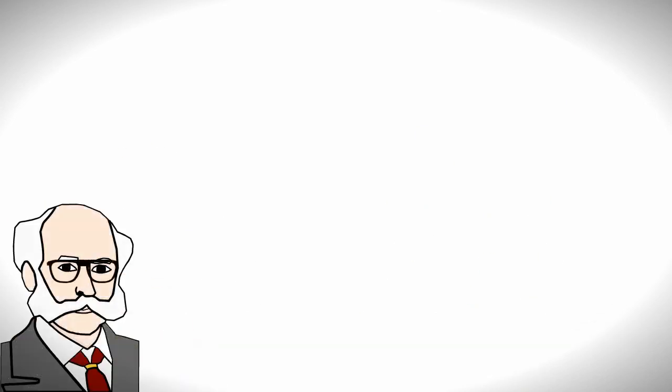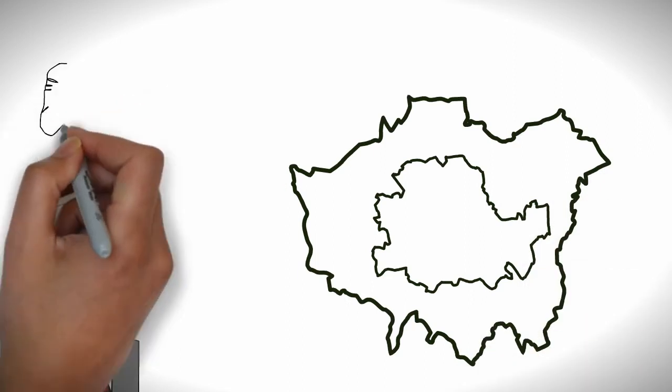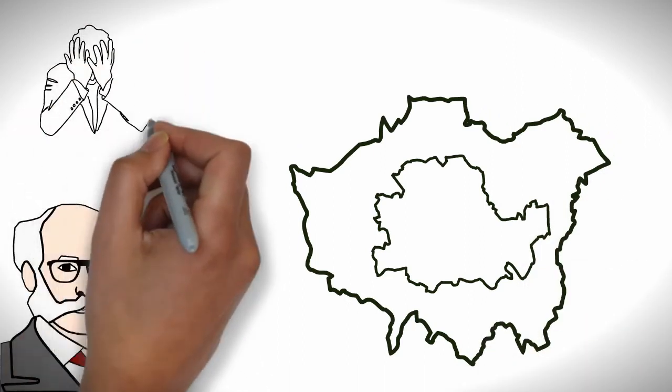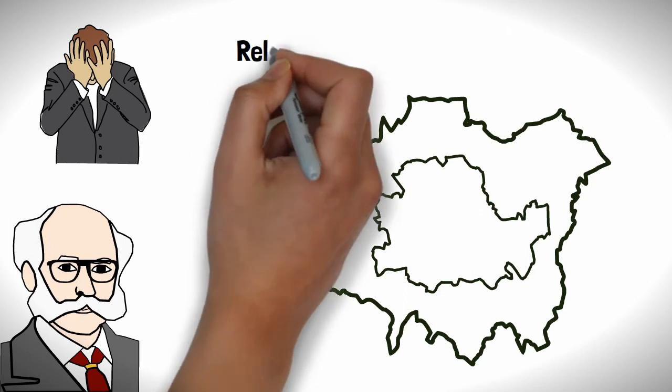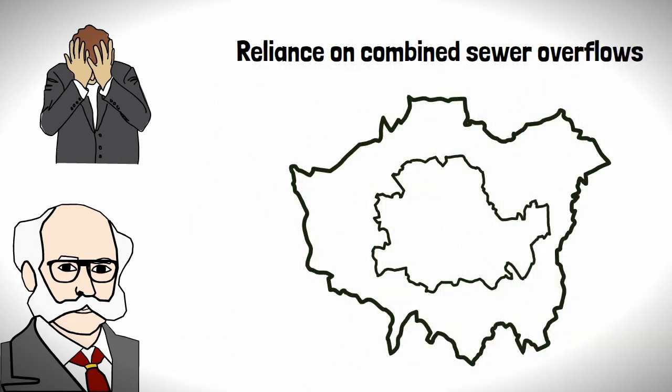However, as ingenious as Bazalgette's design was, as London's population expanded, the pressure on the sewer systems have started to come to light. One of the issues has been the reliance on combined sewer overflows, or CSOs.